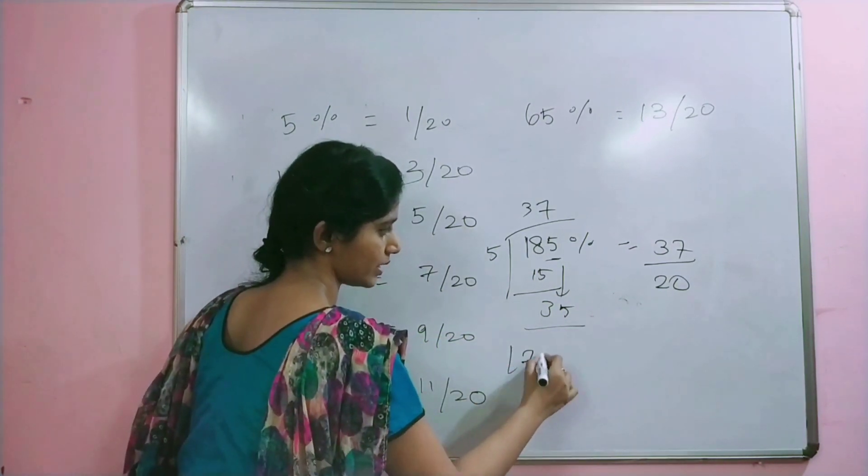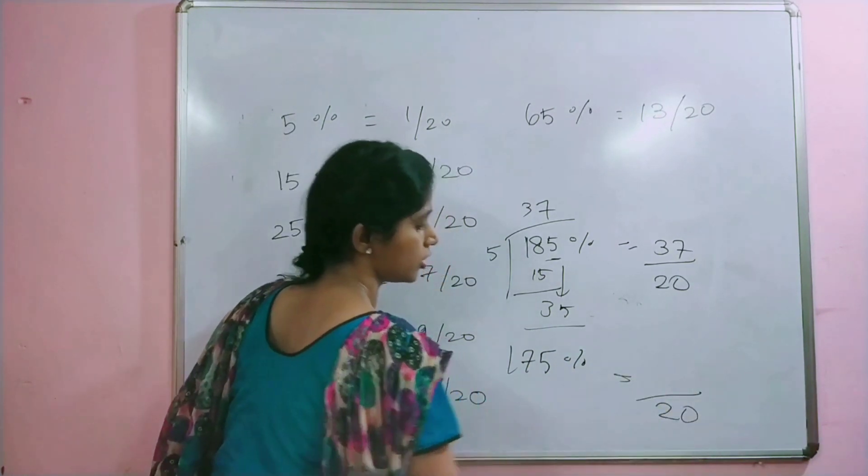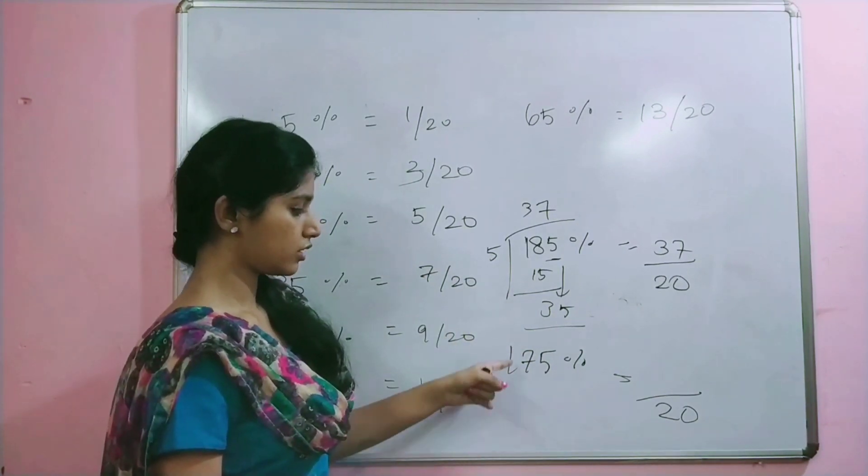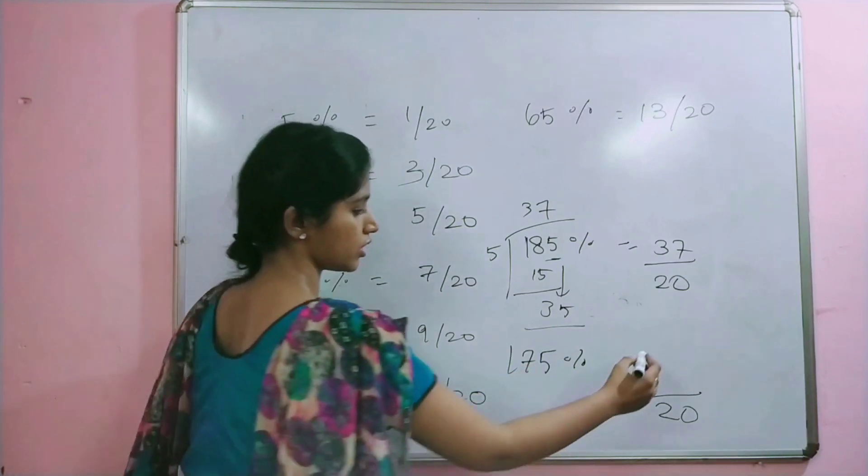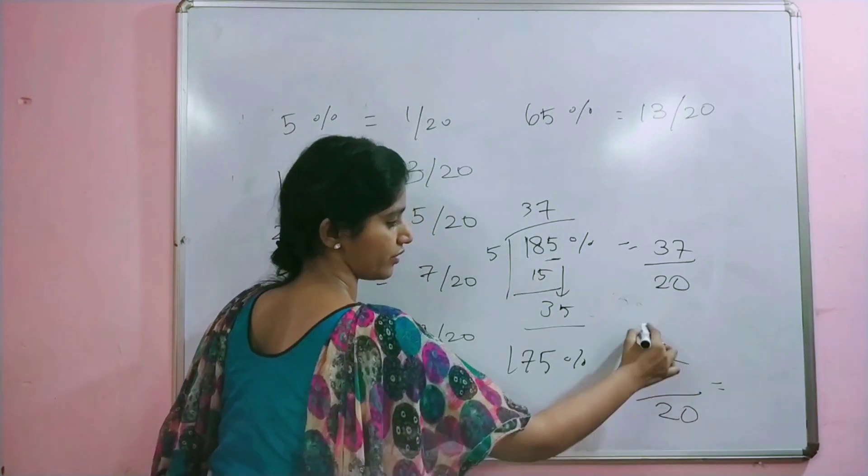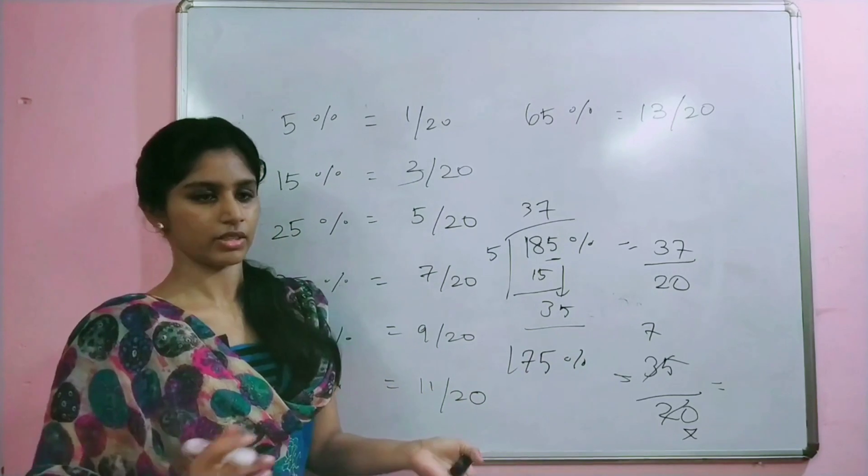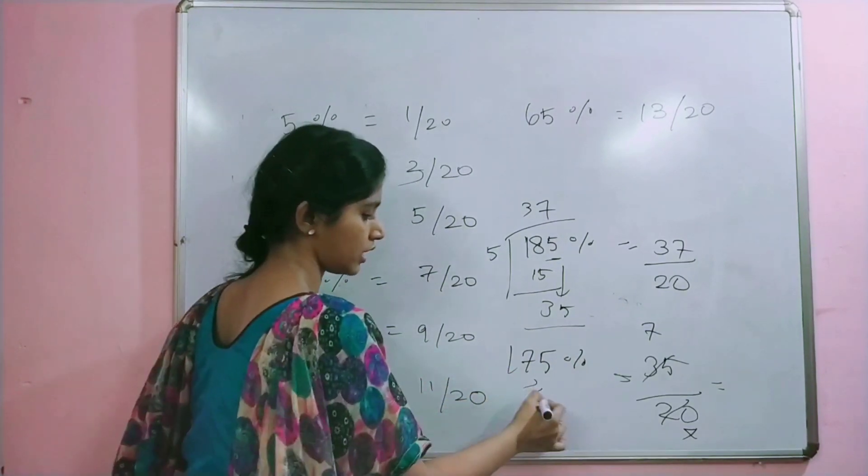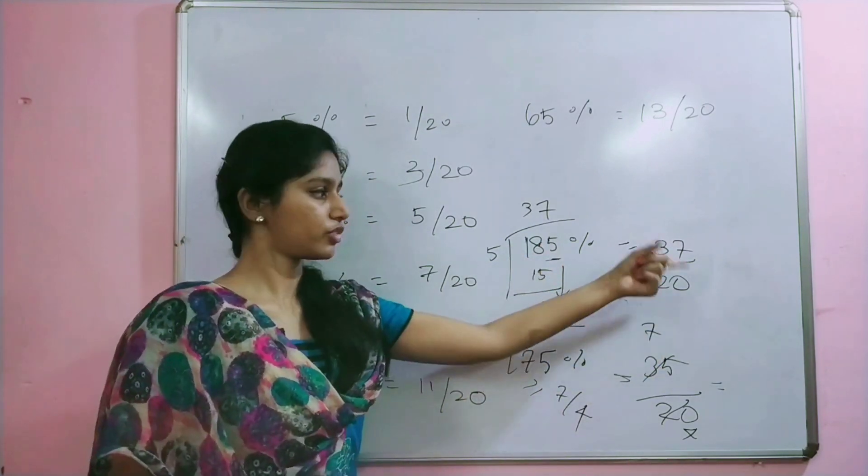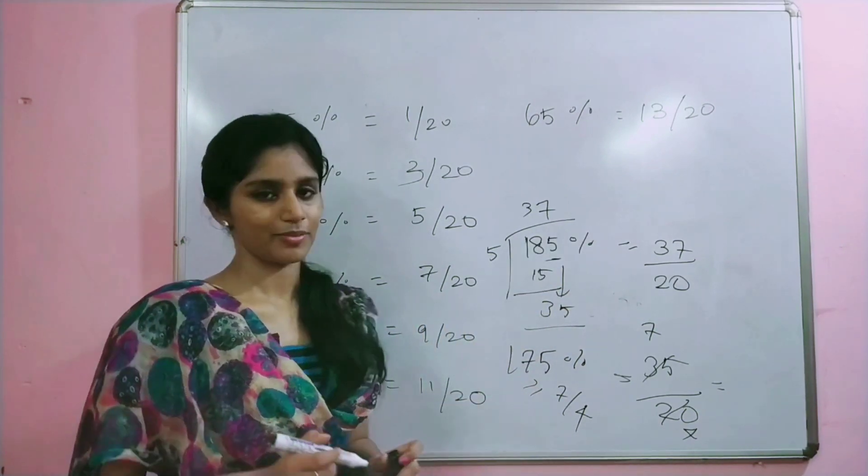Next, if you take 175 percentage, denominator will be obviously 20. 175 is 5 table 35 times. 35 by 20 will be 7 times. The answer in fraction form is 7 by 4. So 175 percentage is 7 by 4. 185 percentage is 37 by 20.